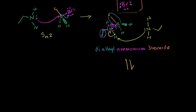If that were to happen, then this molecule will look like this: an ethyl group bonded to a nitrogen with only one hydrogen on it, bonded to another ethyl group. And now it has its lone pair back - it took back that electron and is now neutral. So now this is diethylamine.